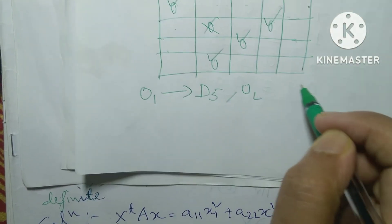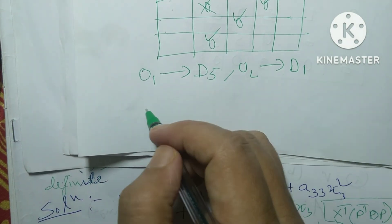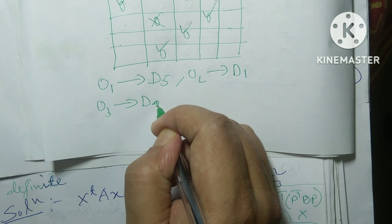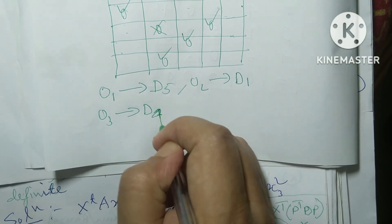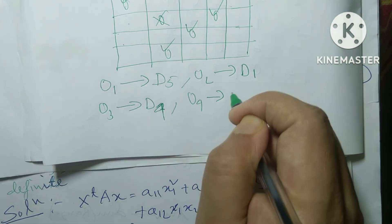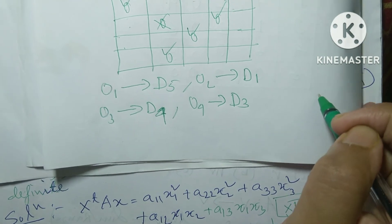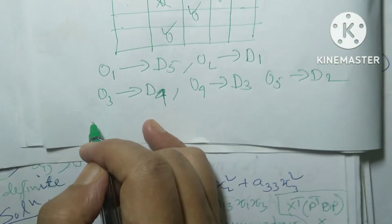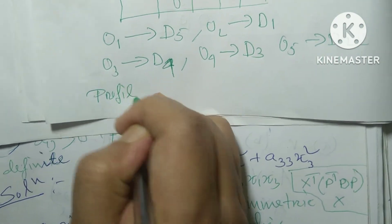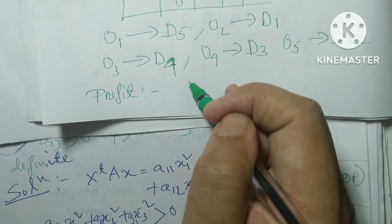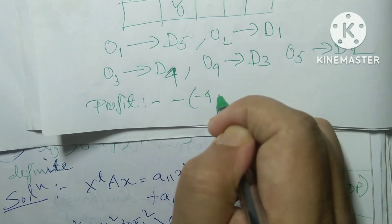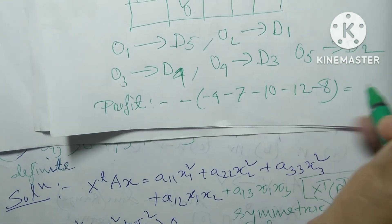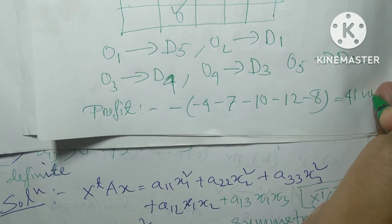The optimal assignments are: O1 → D5, O2 → D1, O3 → D4, O4 → D3, O5 → D2. The total profit is calculated as: 4 + 7 + 10 + 12 + 8 = 41 units. Thanks for watching.